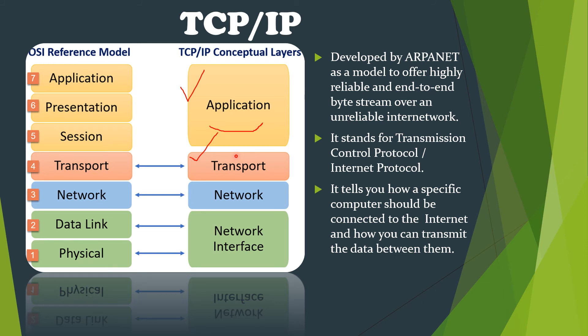The Transport Layer divides the message into fragments known as segments, which are reassembled at the receiver end. The Network Layer is also known as the Internet Layer. As its name suggests, it uses IP — Internet Protocol — and adds source and destination machine network addresses, that is, IP addresses.